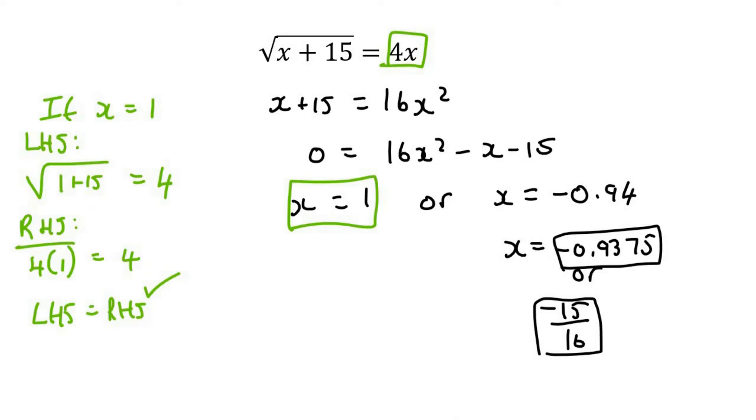Now let's go check the other one. If x equals negative 0.9375, for the left-hand side, that's going to look like this: negative 0.9375, because I'm plugging it in the place of x, plus 15. And if we work this out, it gives us 3.75.